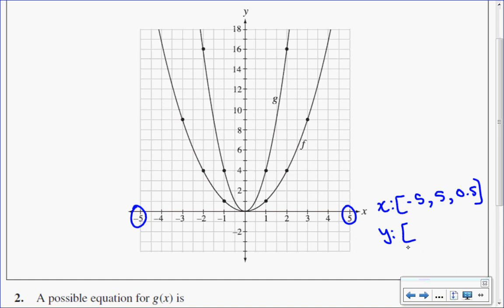I see that my lowest x value is negative five to five going up by point fives. My lowest y value is negative four up to 18 going up by ones.